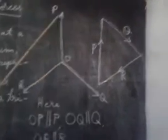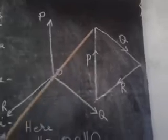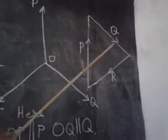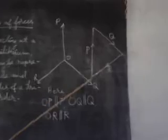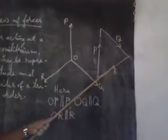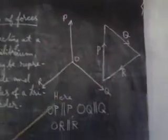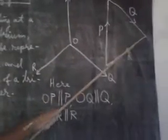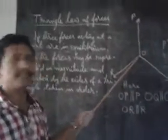For example, for this force, the magnitude of this force can be represented by a side of this triangle. And for O-Q, it can be represented in magnitude and direction by the side Q of this triangle. And the force O-R may be represented in magnitude and direction by the side R of this triangle. That means O-P is parallel to side P, and O-Q is parallel to side Q, and O-R is parallel to side R.